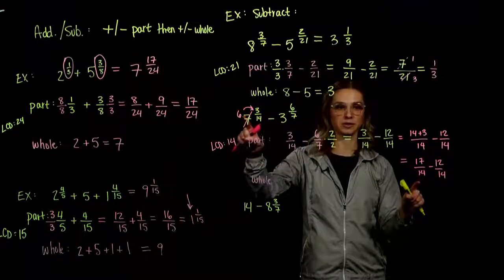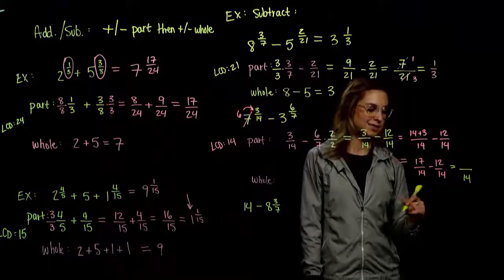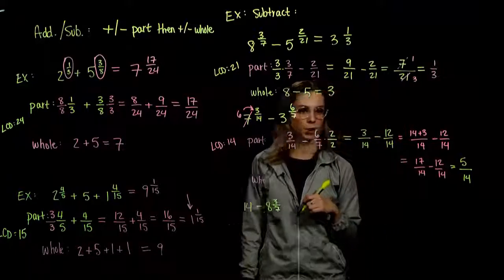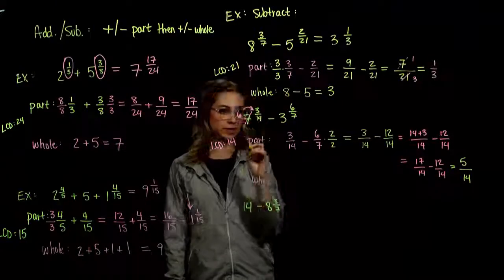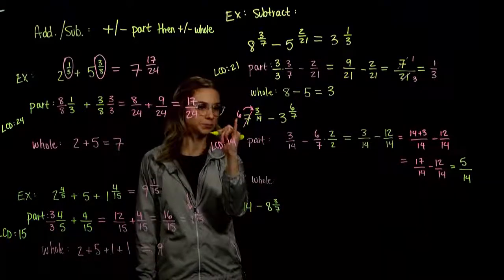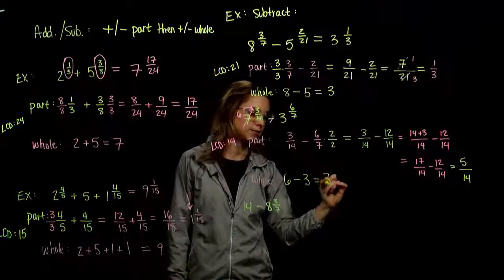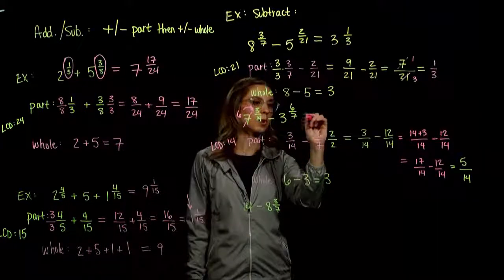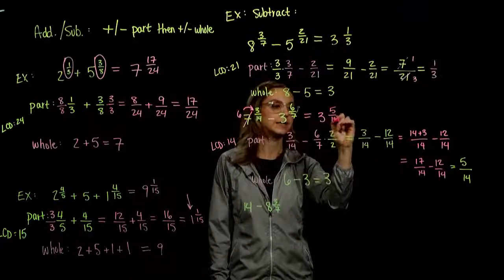We can always borrow from next door. Since we borrowed from the whole, the first number's whole part is now six, not seven. The whole part of the second number is three. Six minus three is a difference of three. So subtracting these two numbers produces three and five-fourteenths.